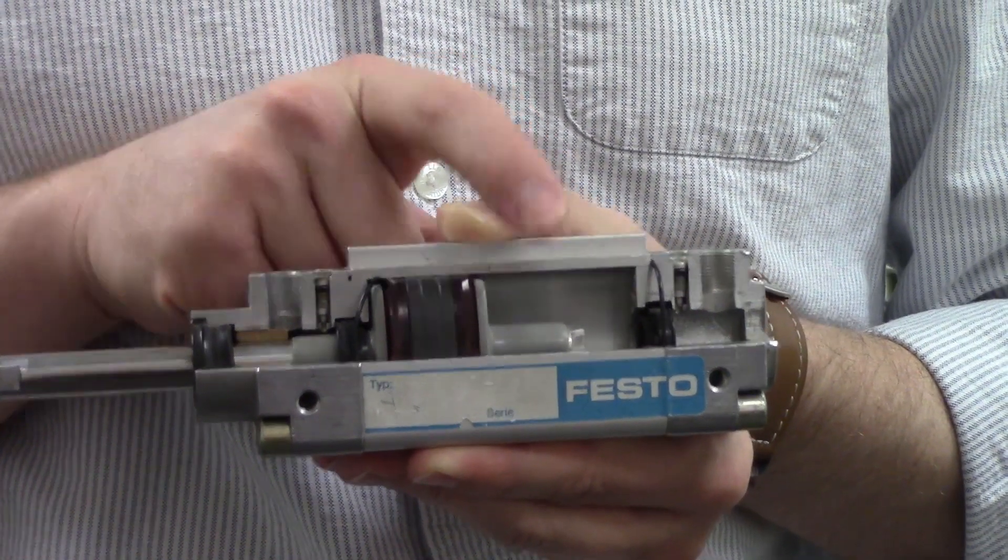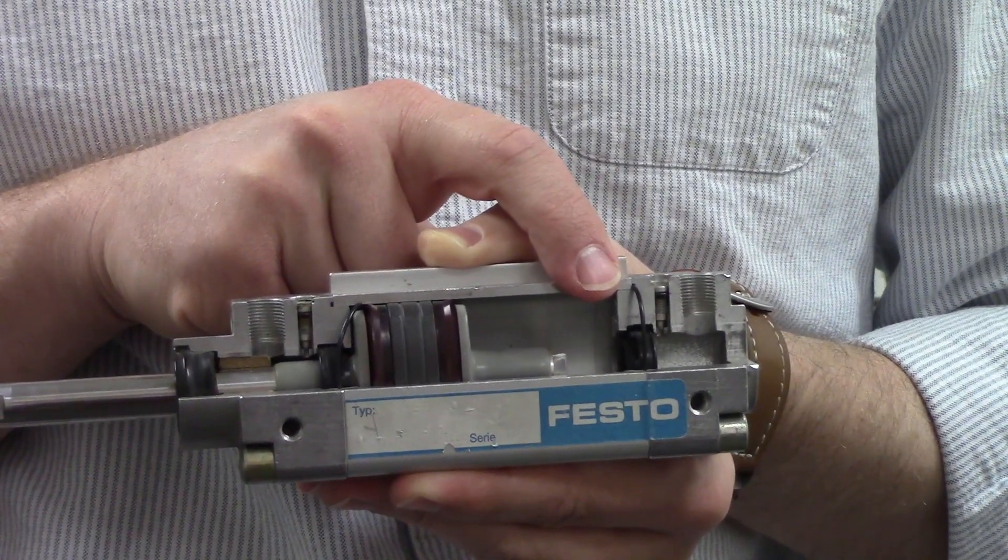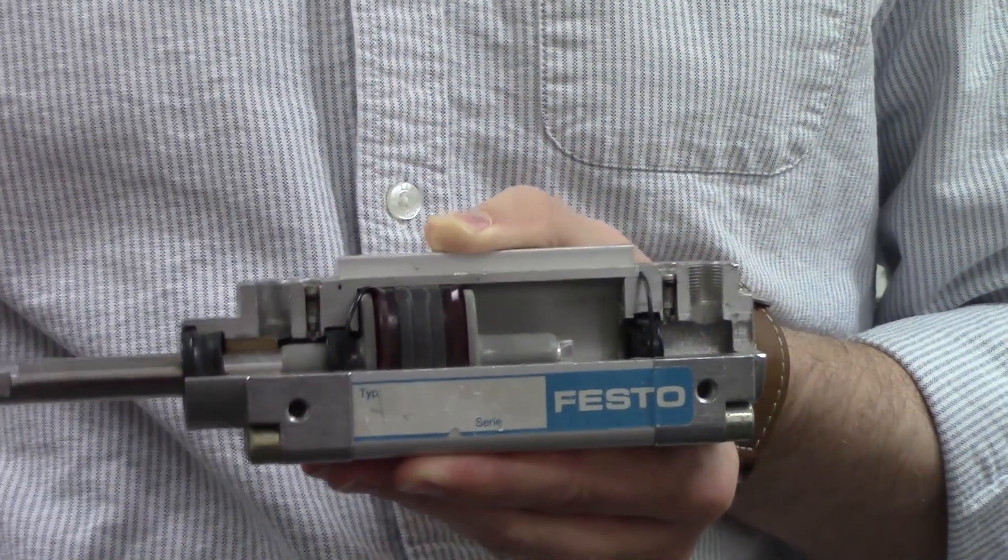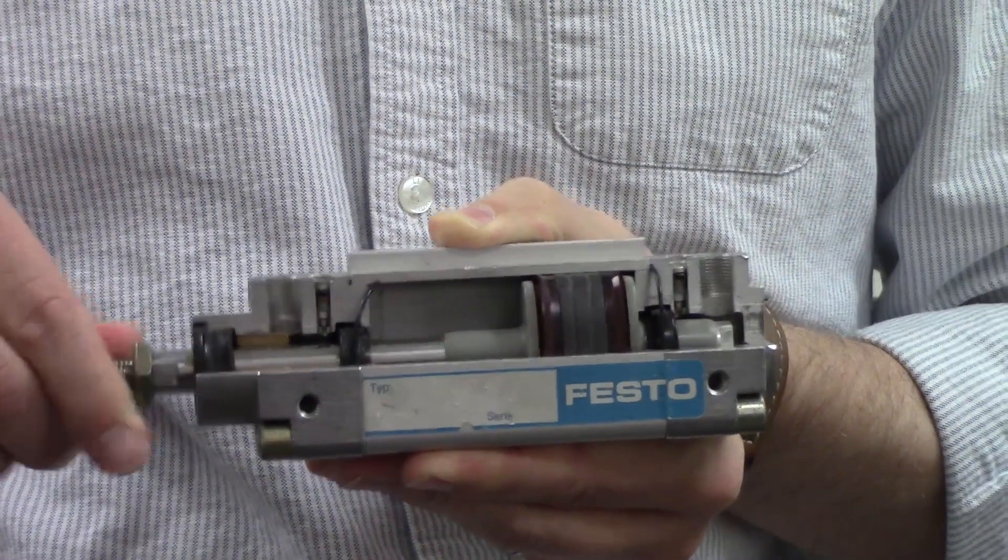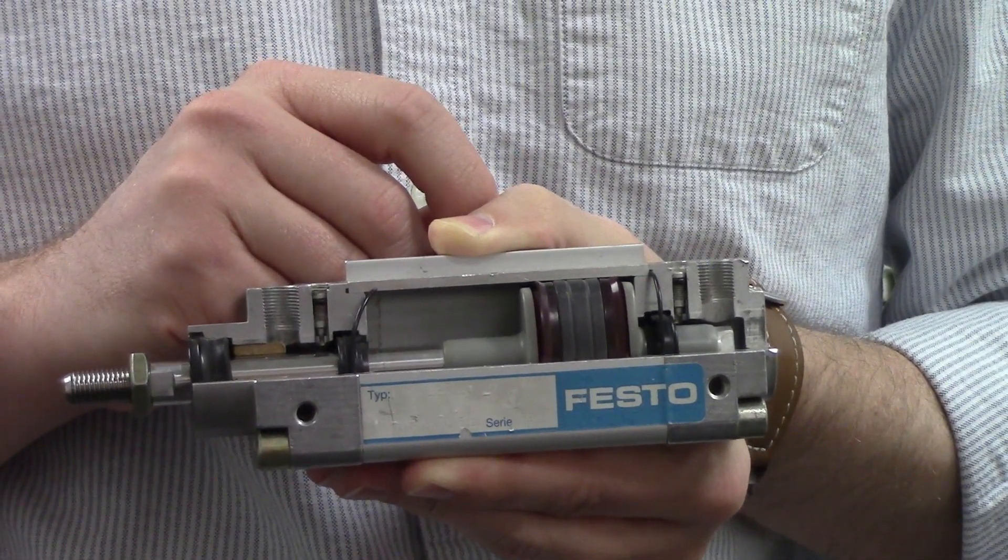In end position cushioning, a cushion spear seals with a sleeve near the end of the cylinder. When the seal is made, the path that the air normally travels out of the cylinder is closed off.